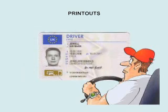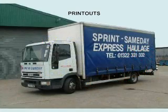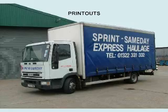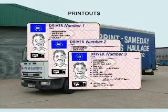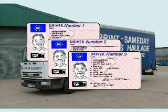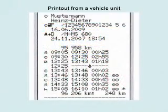Paper printouts can be just for you and relate to your driver's card. They can also be from the vehicle and give all drivers' activities on that vehicle. Here is a section of a paper printout from a vehicle, and an explanation of the lines on it.